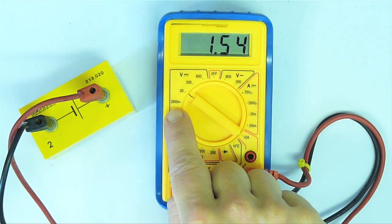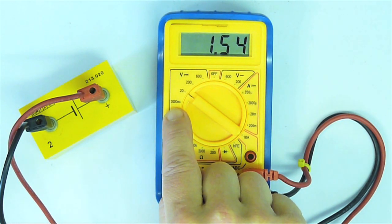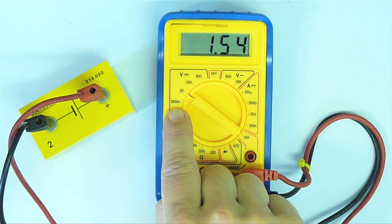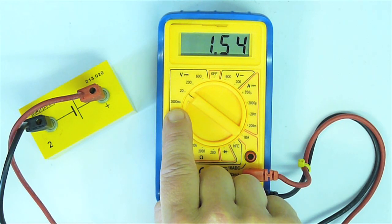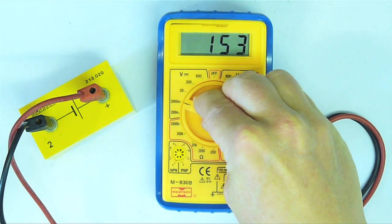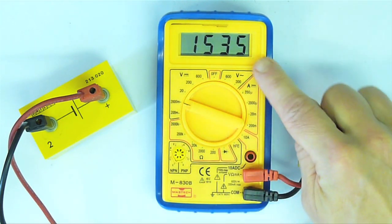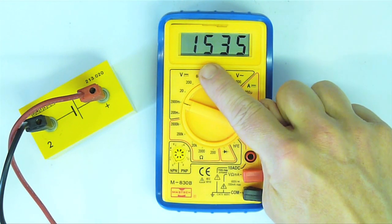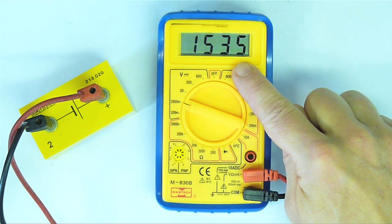The next range down is marked 2000m. That means that the full scale deflection is 2000 millivolts, or two volts. The reading is now 1.535 millivolts.